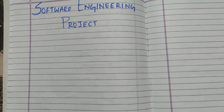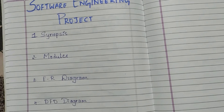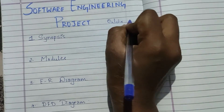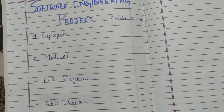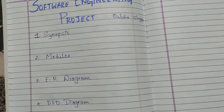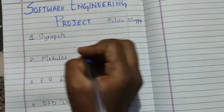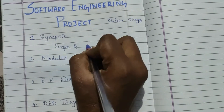Welcome back. Today we'll be learning about software engineering project documentation — specifically how to write your synopsis, modules, ER diagram, and DFD diagram. Synopsis is nothing but a four to five line description about your project. For example, for an online shopping project: storing and managing details of shopping, payments, bills, and customers. In short, synopsis describes the scope and objective of your project.